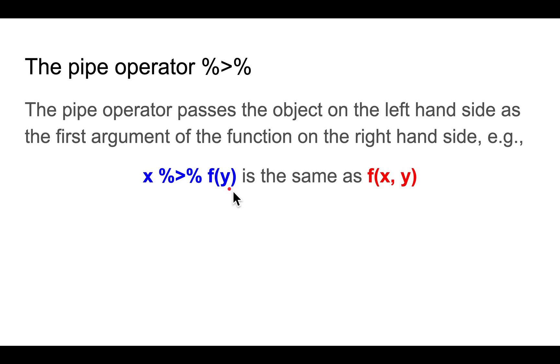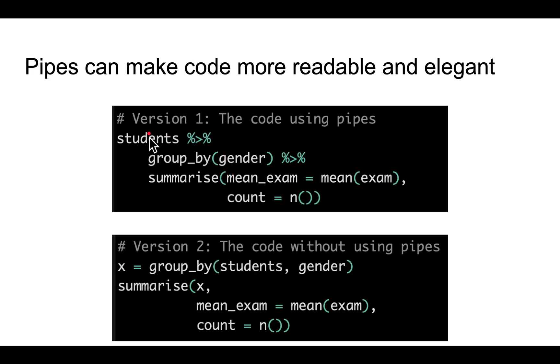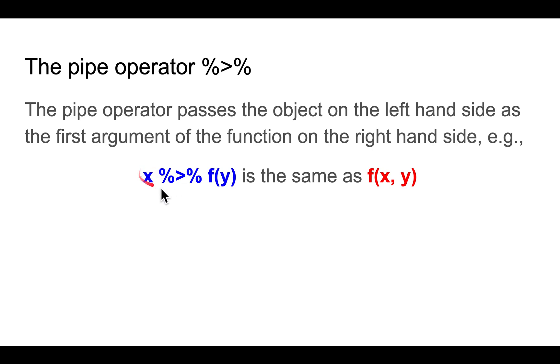The pipe operator is useful because you can do something called chaining, which makes code easier to read. For example, version 1 of this code means take the students, group it by gender, and then summarize it. It's quite easy to read from left to right. If you don't use pipes, you have to create this temporary variable x, which is the students grouped by gender, and then you summarize x. But you don't really need x, it's just a temporary variable. So it's cleaner and more elegant to write the code using pipes. You can write a long chain of pipes: A pipe B pipe C pipe D pipe E, and so on. It's important to know what the pipe means. Remember that it's take this left-hand side, insert it as the first argument of the function on the right-hand side.